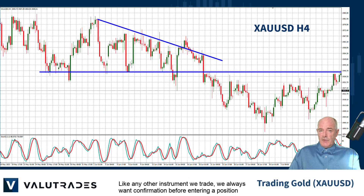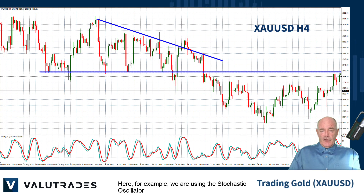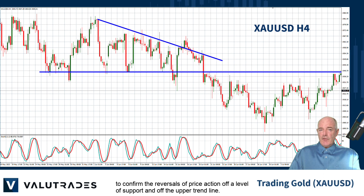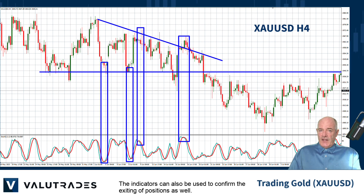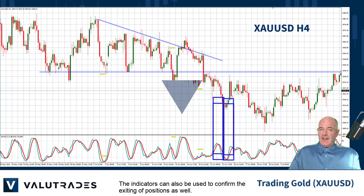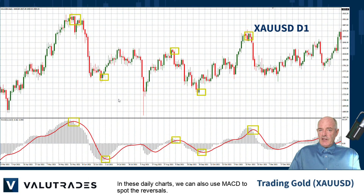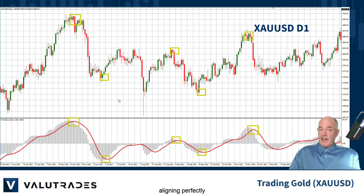Like any other instrument we trade, we always want confirmation before entering a position, and technical indicators are important. Here, for example, we are using the stochastic oscillator to confirm the reversals of price action off a level of support and off the upper trend line. The indicators can also be used to confirm the exiting of positions as well. In these daily charts, we can also use MACD to spot reversals. The yellow boxes indicate where the signal line left the MACD histogram corresponding with price action reversals aligning perfectly.